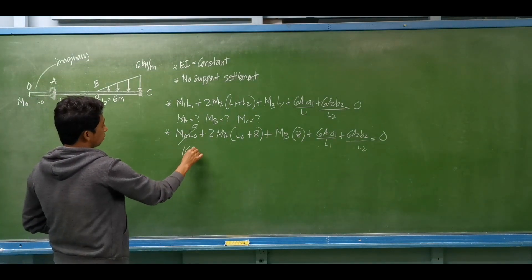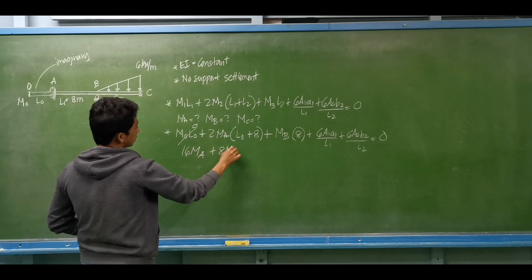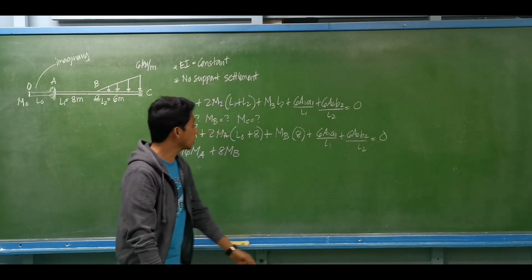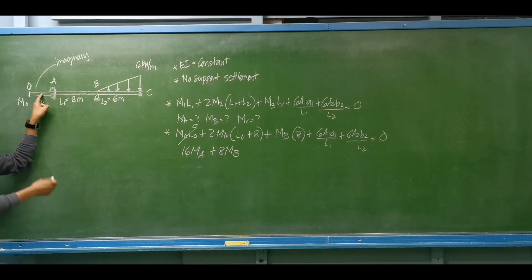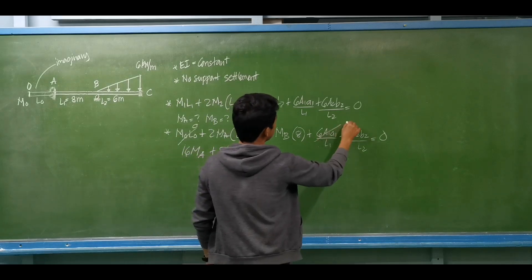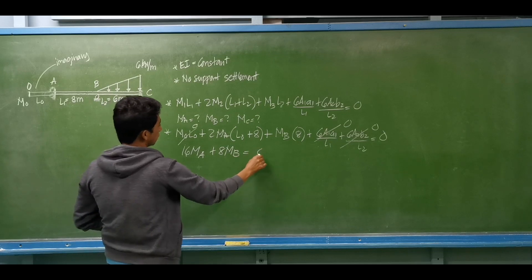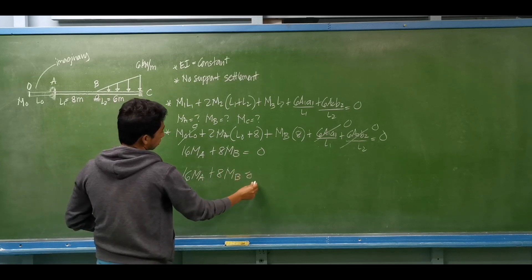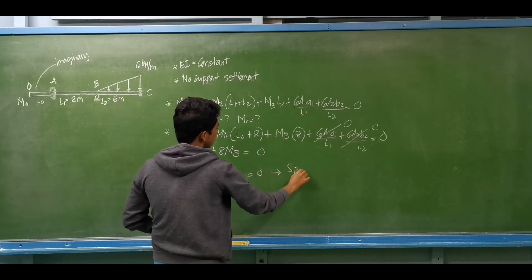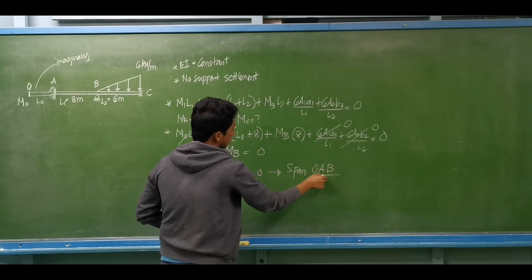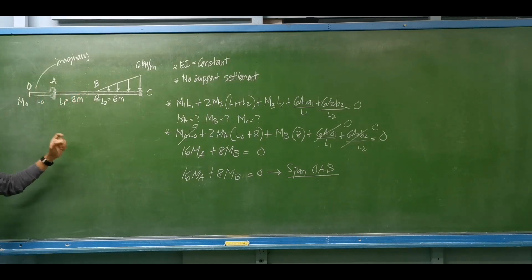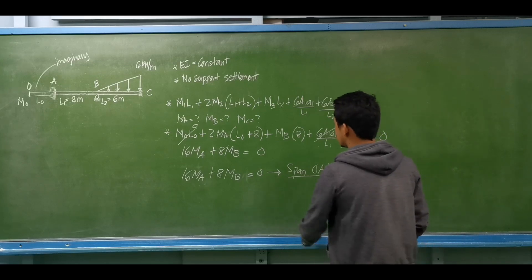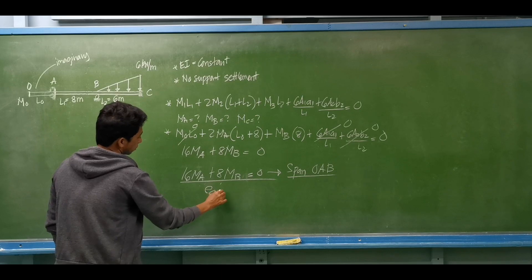Setting L-sub-0 and M-sub-0 to zero, we get 16 times moment at A plus 8 times moment at B equals zero. The terms 6A1-bar/L1 for the imaginary span are zero since there is no real loading there. So our first equation, considering span O-A-B, is: 16·MA + 8·MB = 0. This is equation number 1.